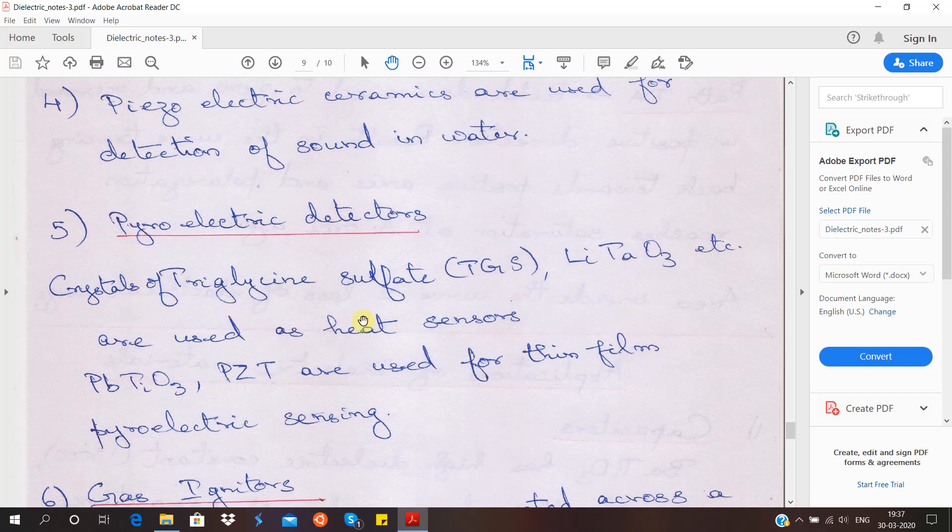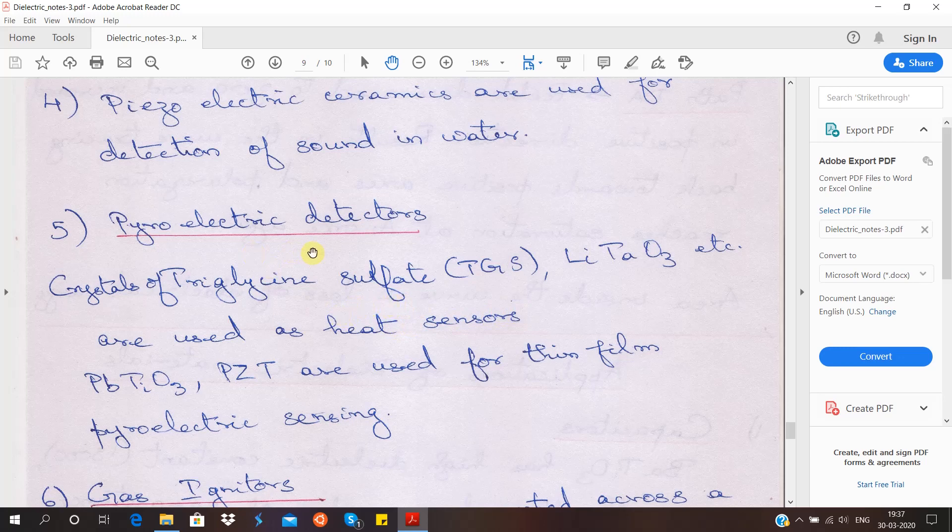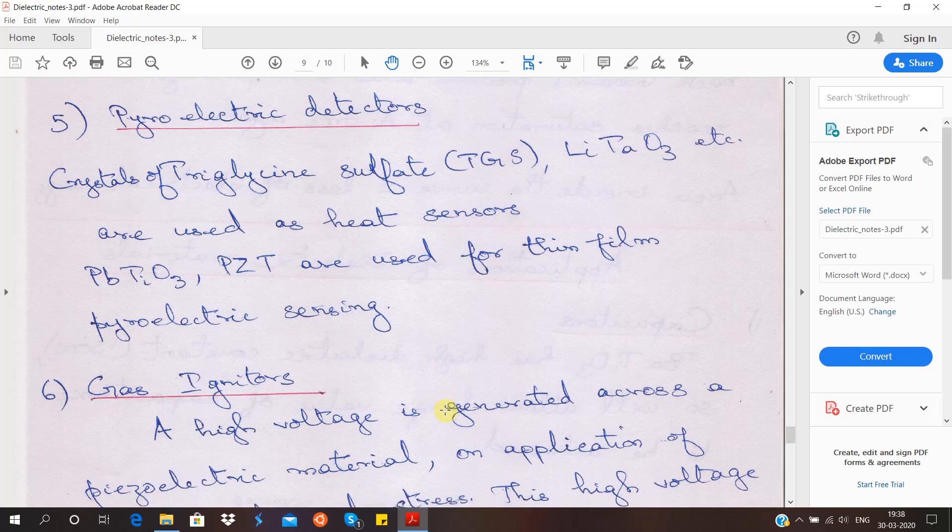Now coming to pyroelectric detectors. These are a few examples of heat sensors. Pyroelectric is when there is a change of heat and polarization occurs. So basically this is used for thin film detection sensors. You have a few examples here: crystals of triglycine sulfate and then PZT, lead, zinc and titanium. So these are pyroelectric sensors.